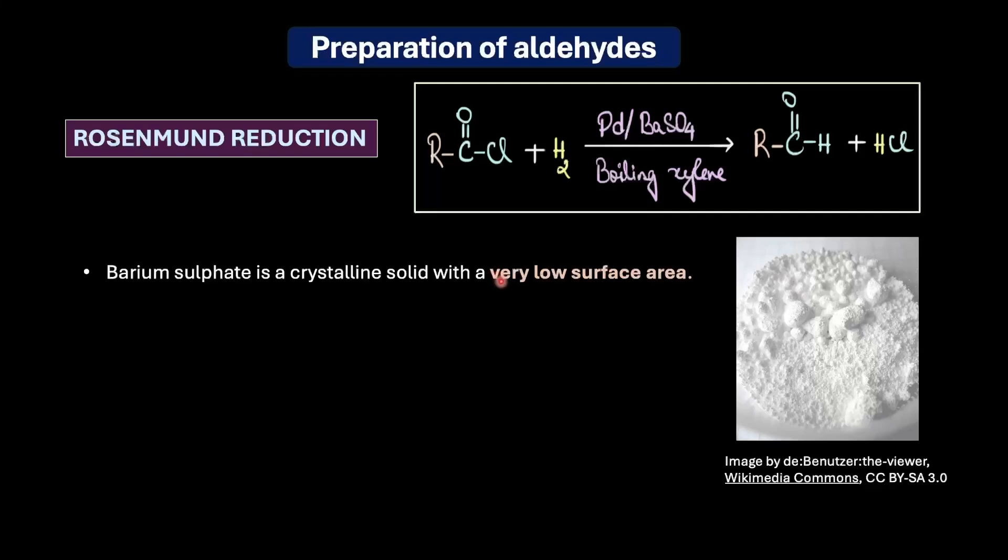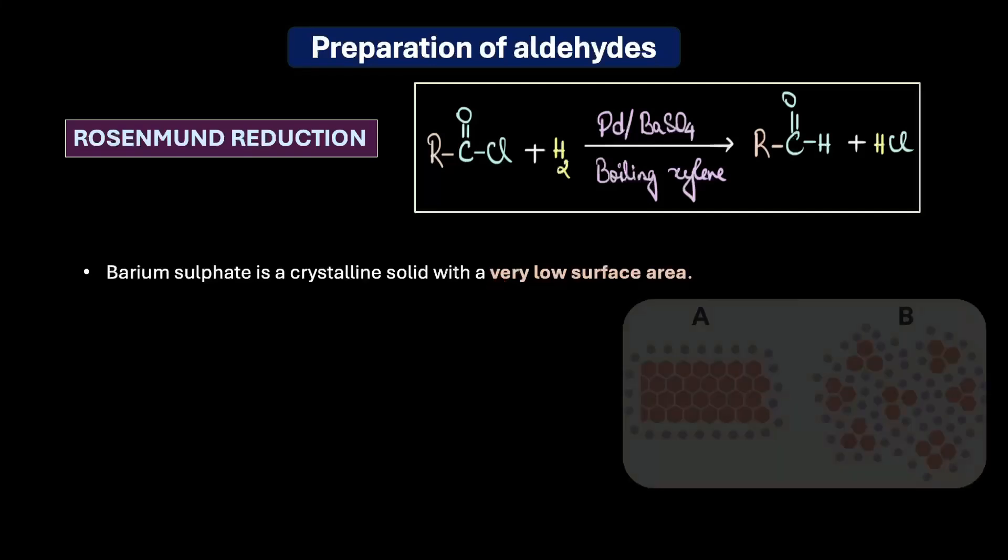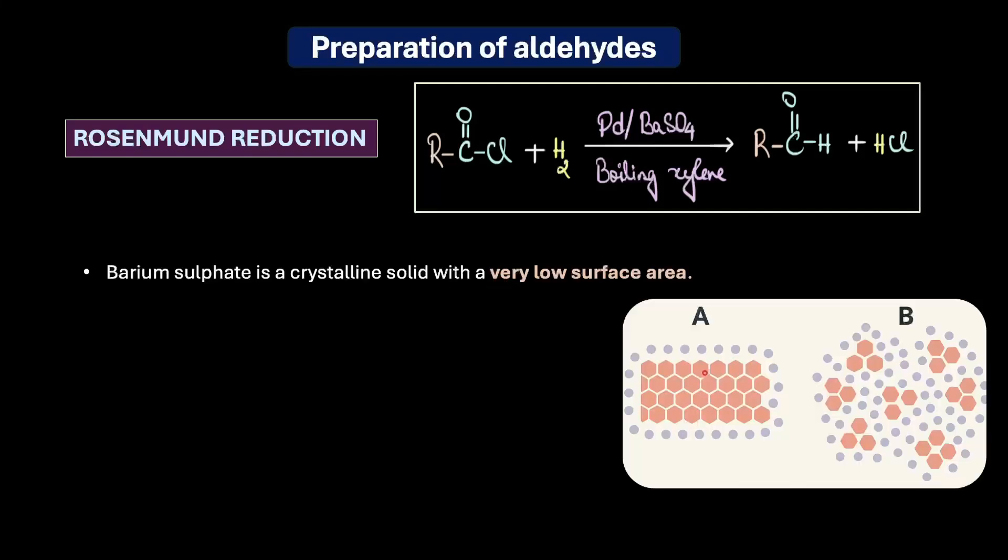If you look at this image, you can see that on the left side we have a large compact catalyst structure, and only a small portion of the surface is exposed. This allows fewer reaction sites for the molecules to interact. On the other hand, if you look at the right side, the same material is broken into smaller pieces. This increases the overall exposed surface area, giving many more sites for the molecules to interact.